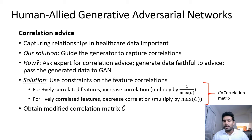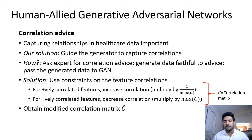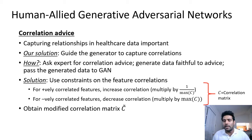To do this, we use constraints on feature correlations — we want to either increase or decrease the correlation between features. For positively correlated features, we want to increase the correlation, so we multiply the correlation values by 1 divided by the maximum of the absolute value of the correlation matrix. Since correlation matrix values lie between -1 and 1, the absolute value lies between 0 and 1, so dividing by it increases the correlation value. Similarly, for negatively correlated features, we multiply by the maximum of the absolute values to decrease the correlation. In this way, we obtain the modified correlation matrix.